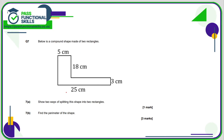Show two ways of splitting the shape into two rectangles: horizontally and vertically. The perimeter needs all side lengths added up, but there are two unknowns. The left-hand side is the total height: 18 plus 3 is 21. The base is 25, and if it's 5 from here to here, then the remaining length is 25 minus 5, which is 20. Adding all these numbers gives a total of 92 centimetres.